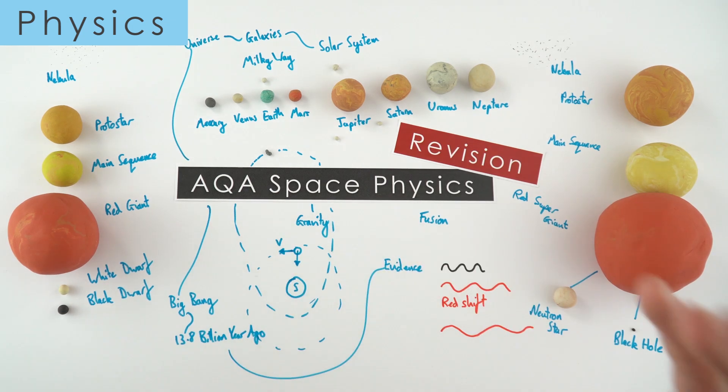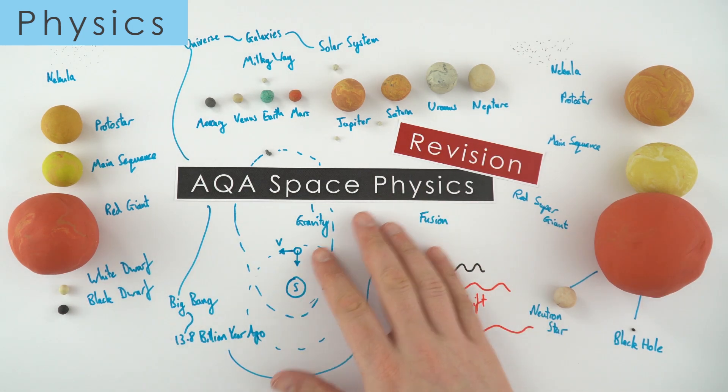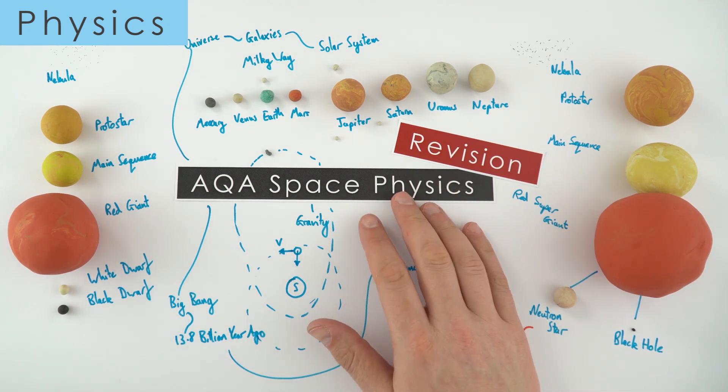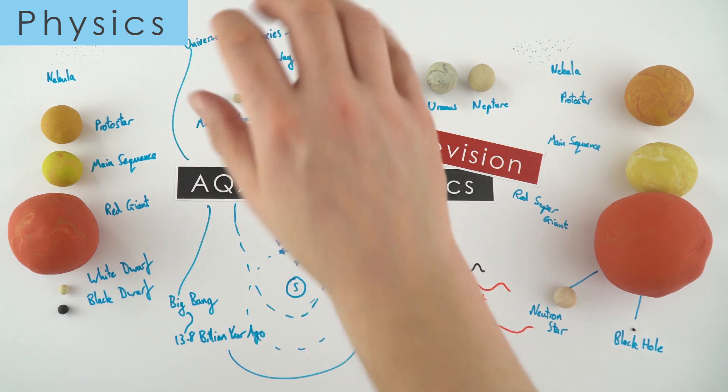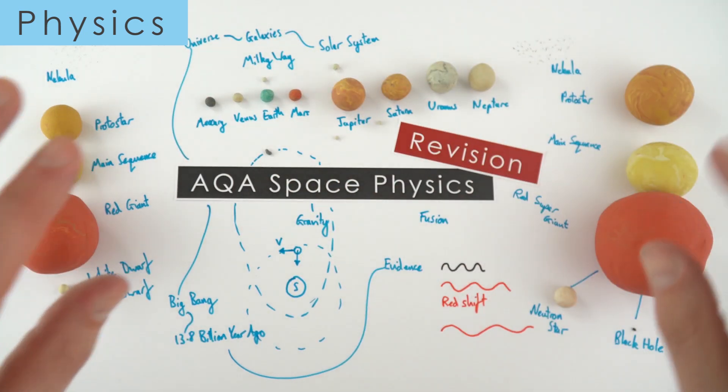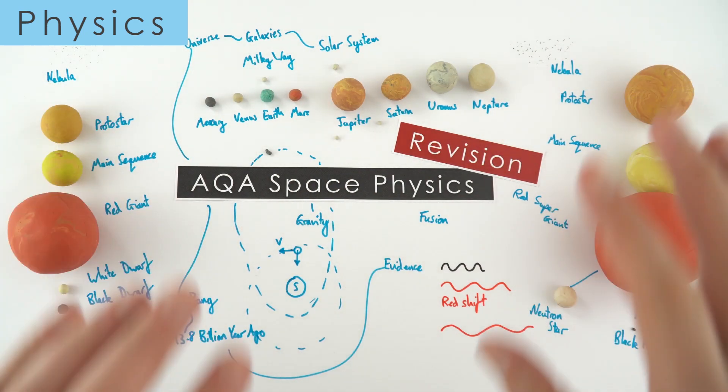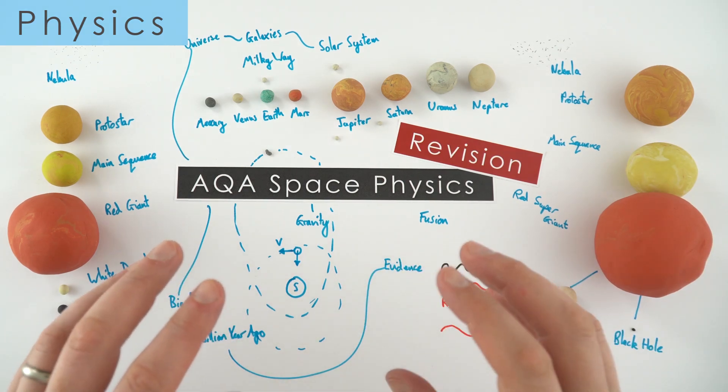But basically this is just a quick bit of revision of a small amount of space physics. A super fascinating topic. So we've got the parts of the solar system, we've got evolution of low mass and high mass stars, as well as evidence for things like the Big Bang.